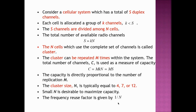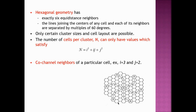The cluster size N typically varies as 4, 7, or 12. A smaller N is desirable to increase capacity. The number of cells per cluster can be found using the formula N = i² + i·j + j². For example, with i = 3 and j = 2, substituting gives N = 19.